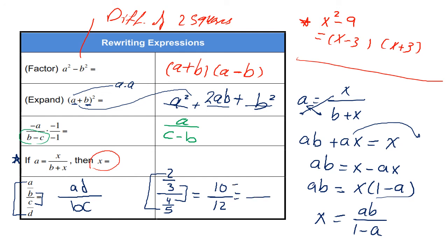Later, you can divide it up and down by 2 to simplify this fraction. It gives you 5 over 6.